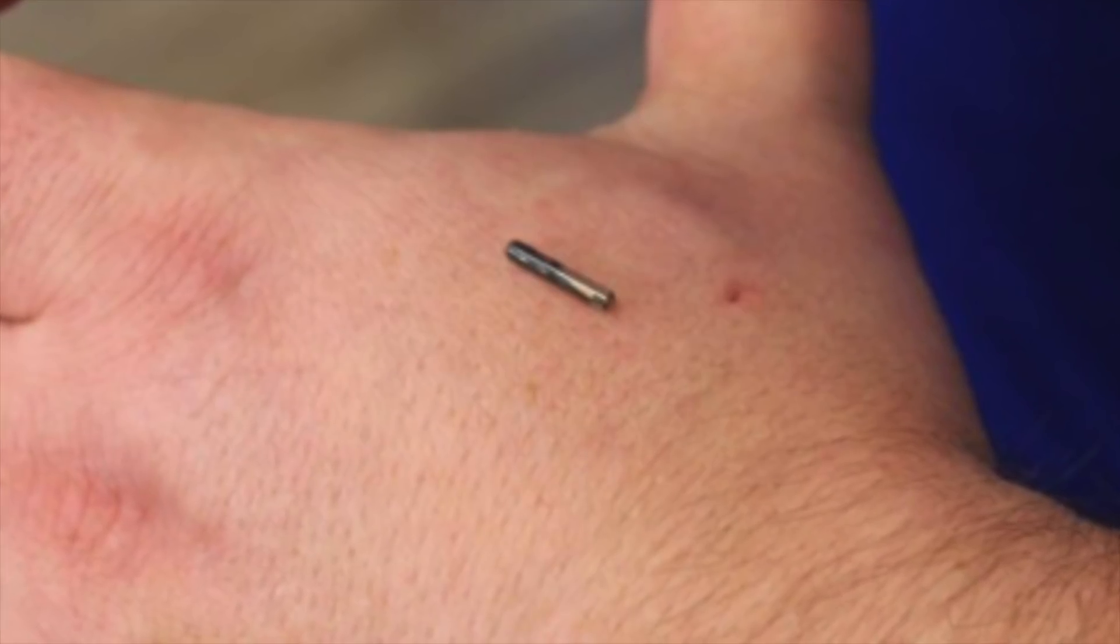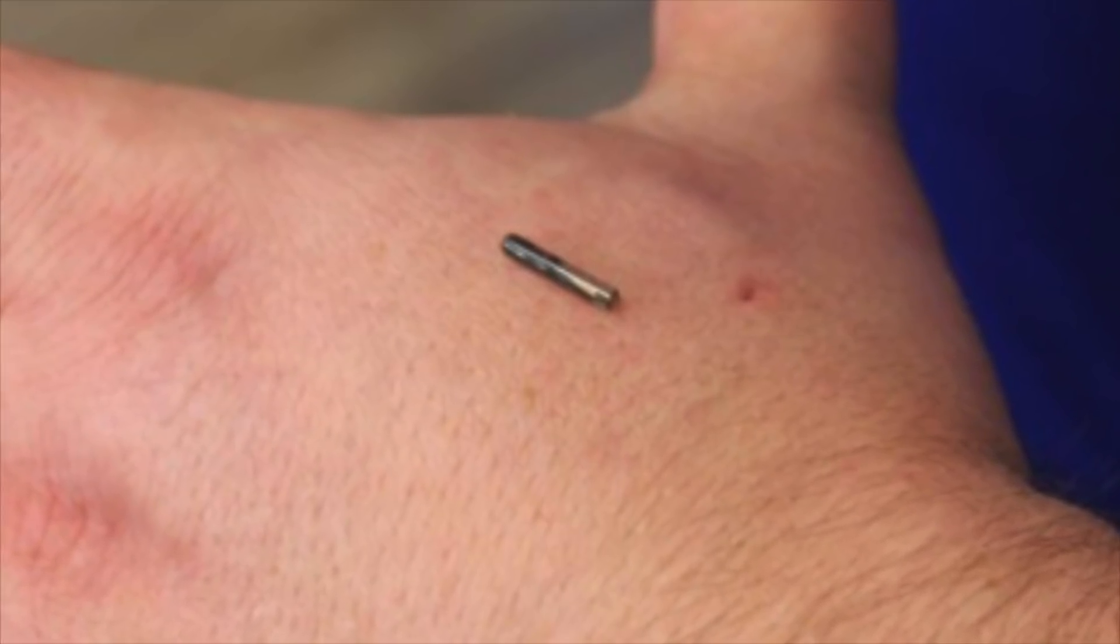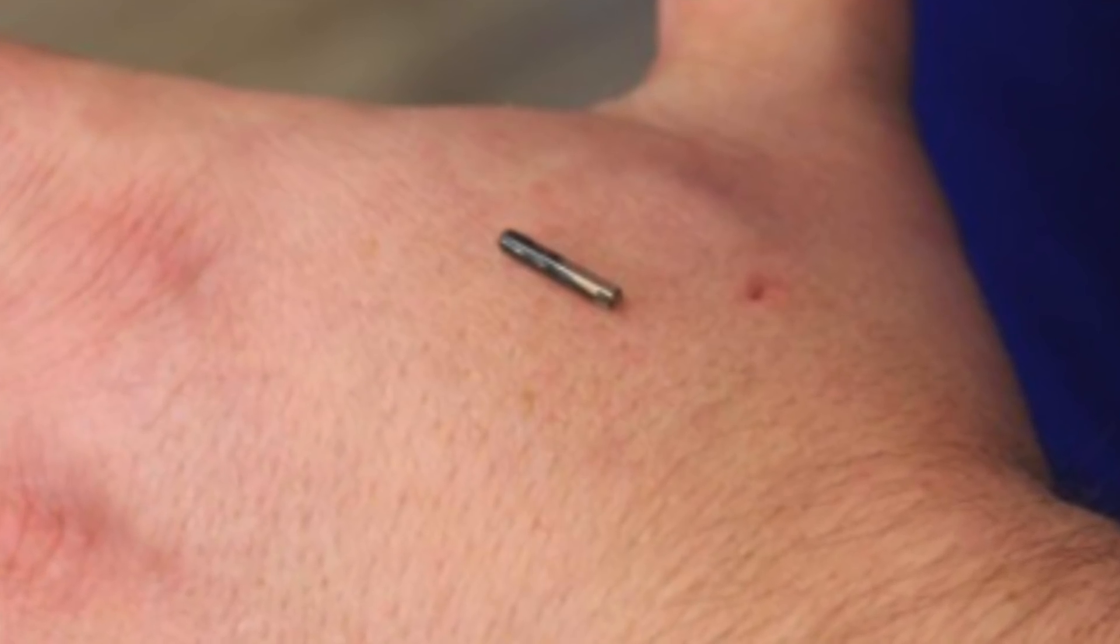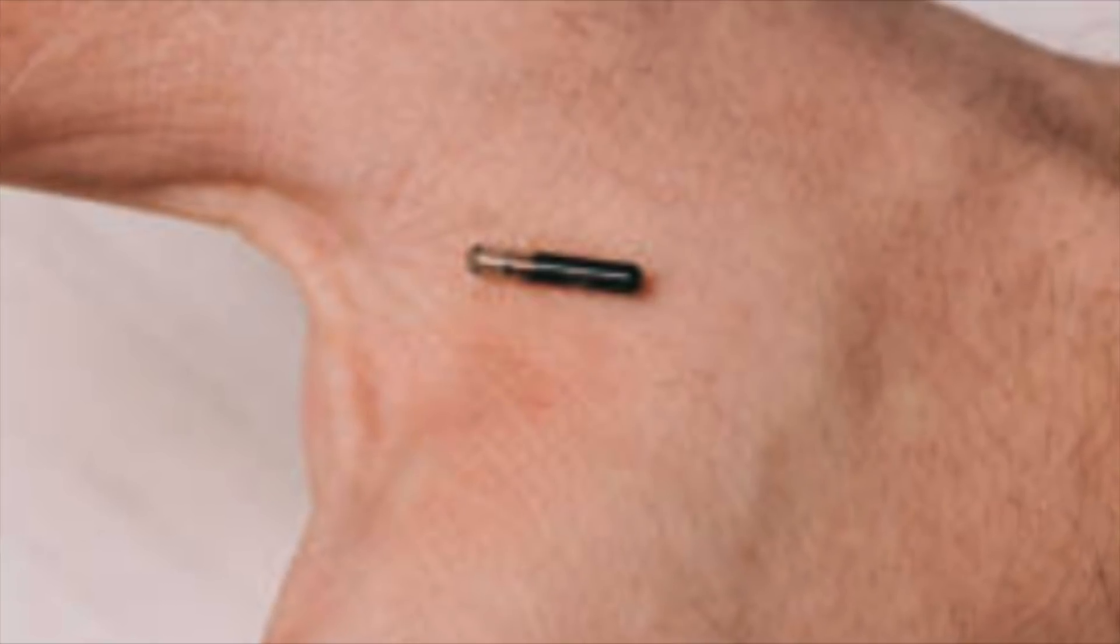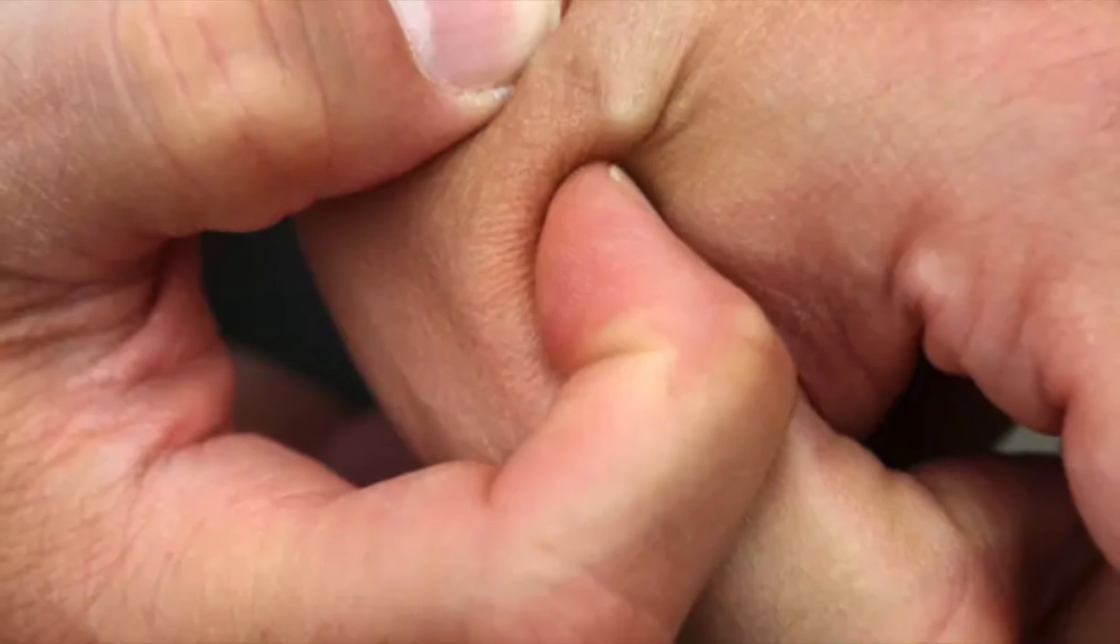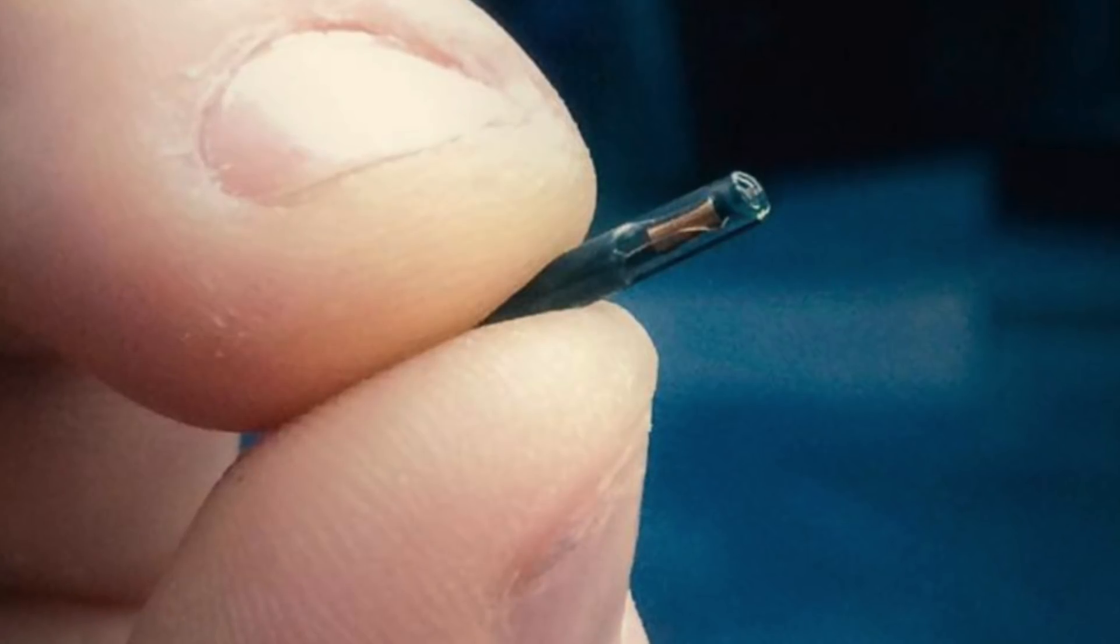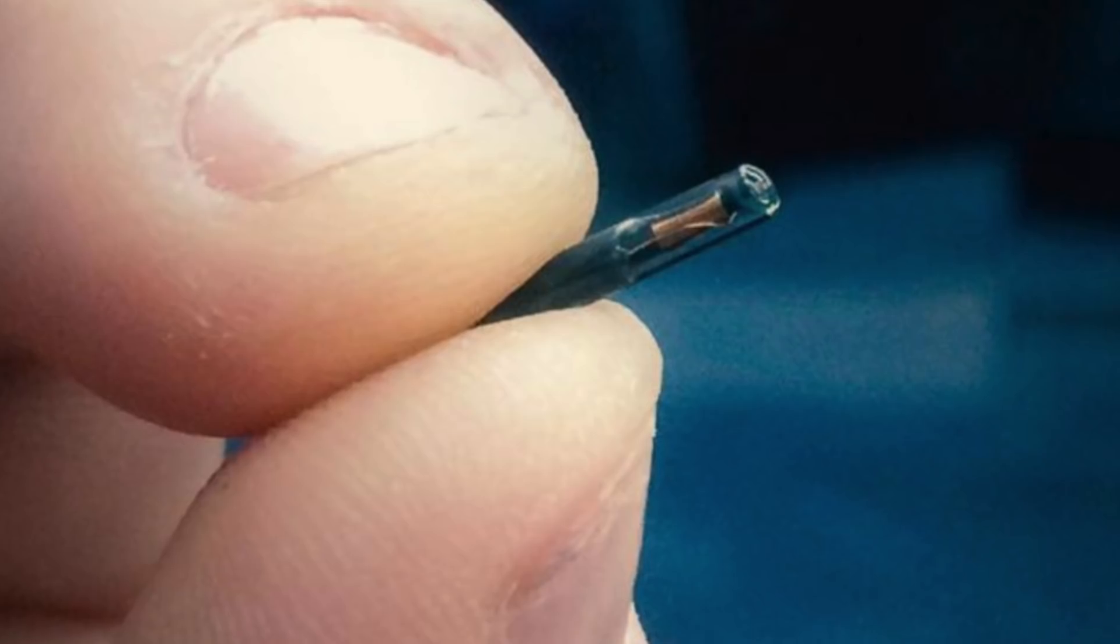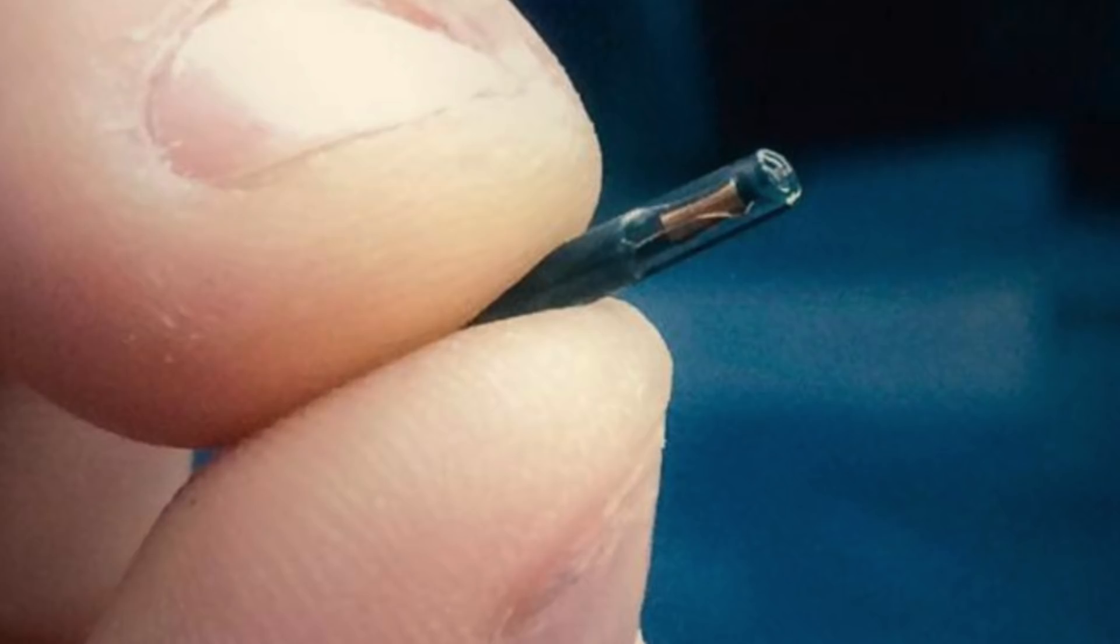A new chip could put AI in the palm of your hand. The objective of an artificial consciousness framework that works like the human cerebrum drew a stage nearer as of late. Analysts at the Massachusetts Institute of Technology declared another particular reason chip that speeds up neural network calculations by three to multiple times over current chips, while lessening power utilization by up to 95%. It does it by working in a simple style more in accordance with how the mind functions, instead of managing the endless series of ones and zeros in conventional processing.